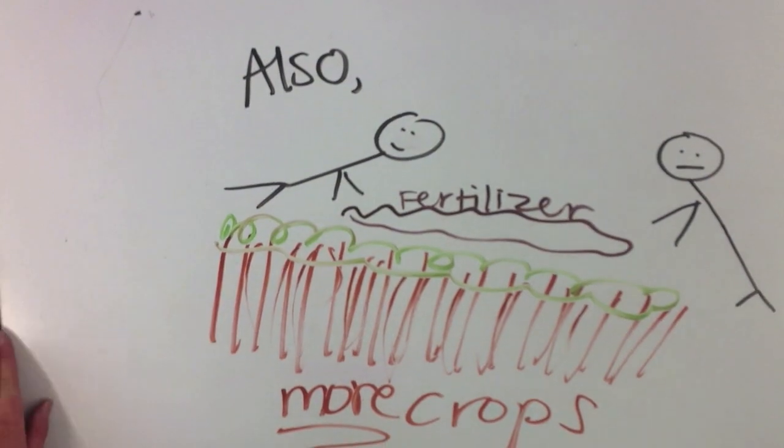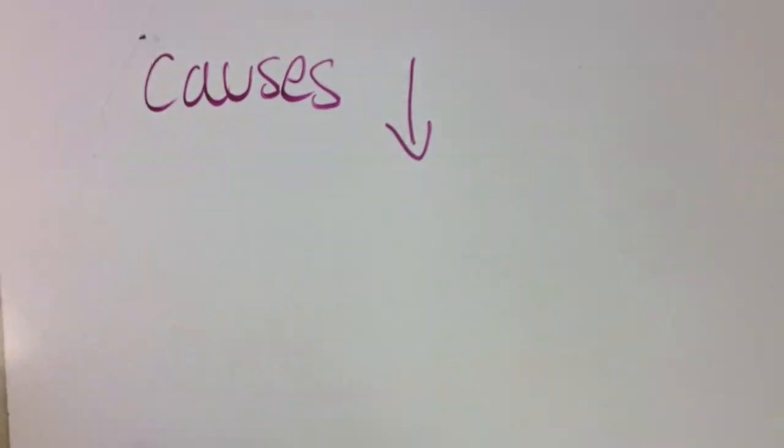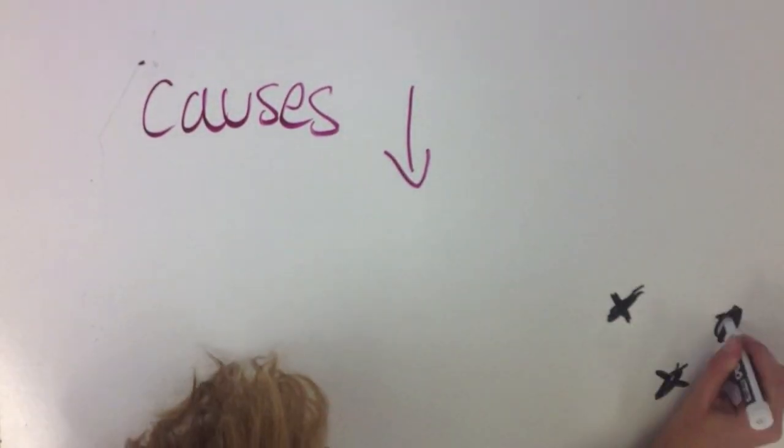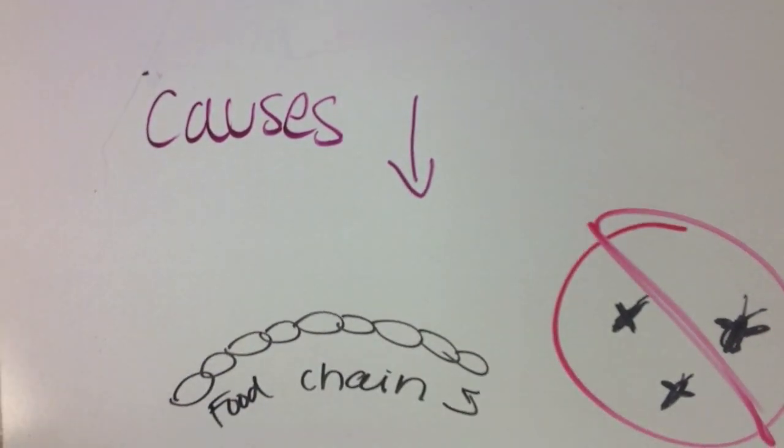When the amount of crops increases, the amount of pesticides also increases, thereby decreasing biodiversity of general ecosystems, especially those adjacent to cropland.